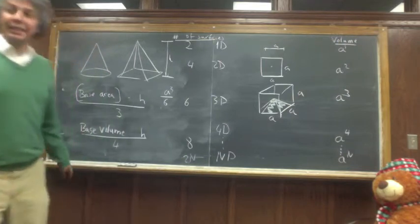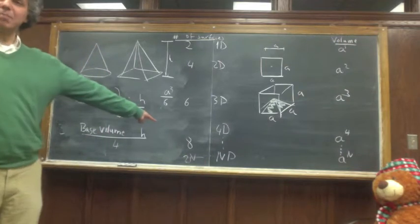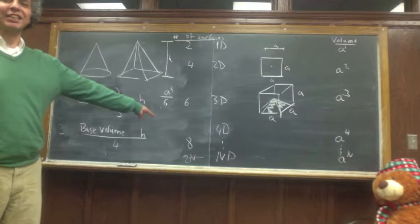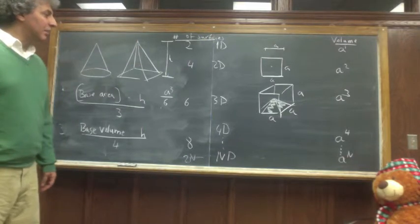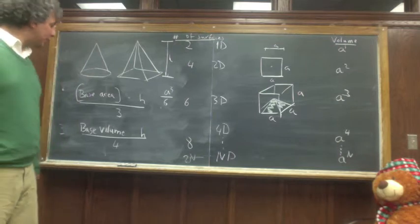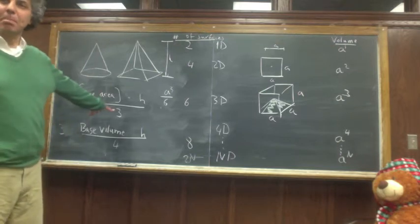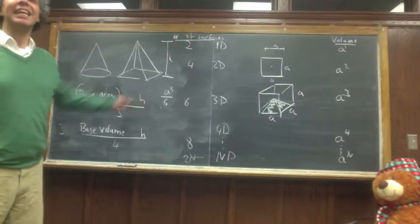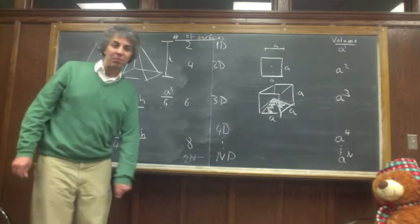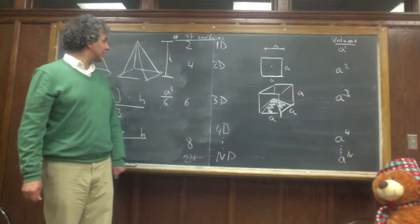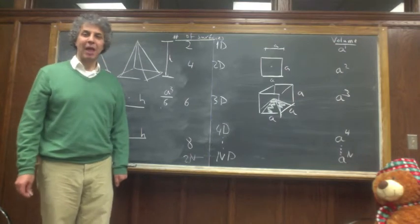I think we did it. We can go to N dimensions. We will break it into 2N identical N-dimensional pyramids. It's going to be the base times the height divided by N. That is the volume of an N-dimensional pyramid. Thank you.